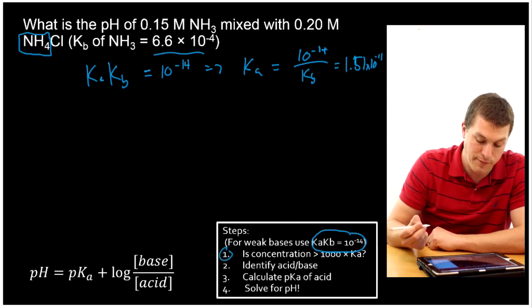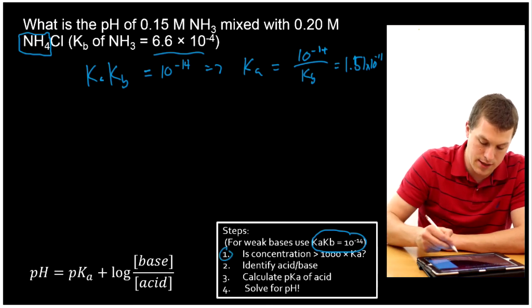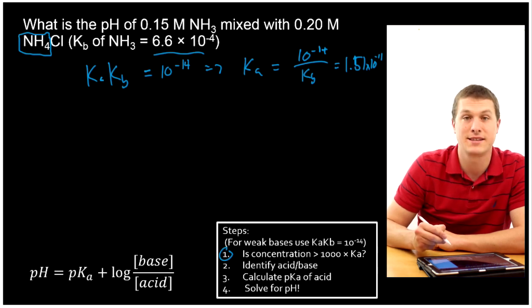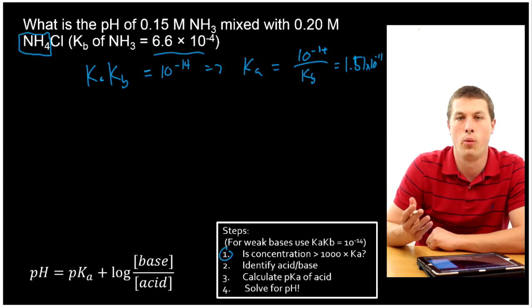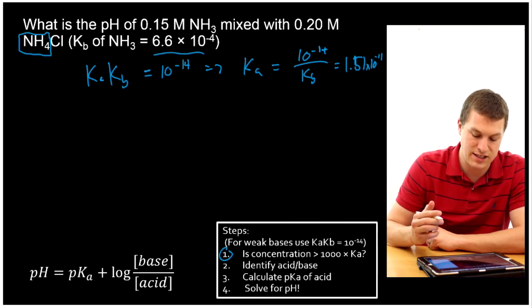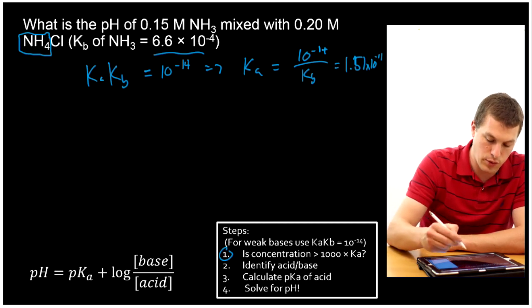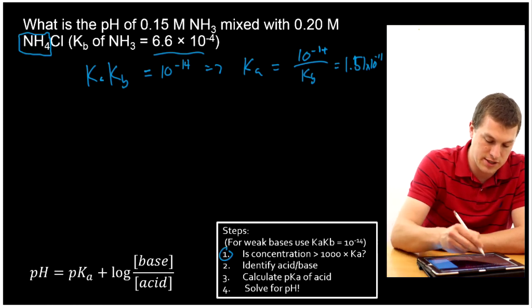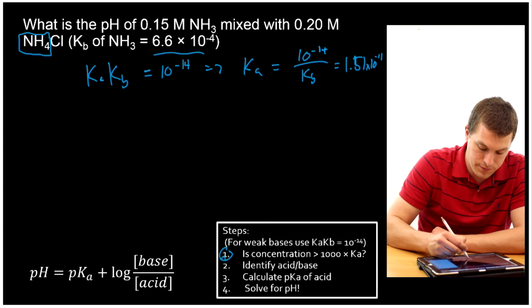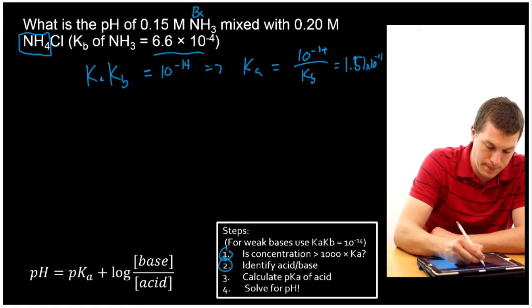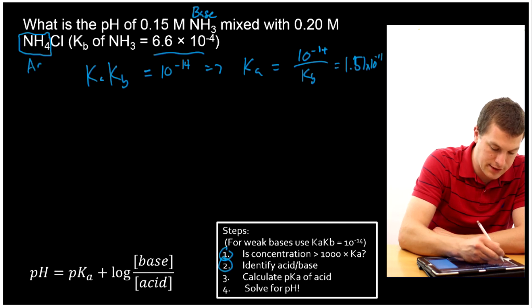Now I need to check, now that I have my Ka, I need to check is my concentration a thousand times greater. Well, the Ka is 10 to the minus 11th. That's really, really small. So that's going to be much smaller than a thousand times our concentration. So we're good to go ahead and just identify our acids and bases. We've said that NH3 is a base. So that's our base, and this guy is actually our acid.